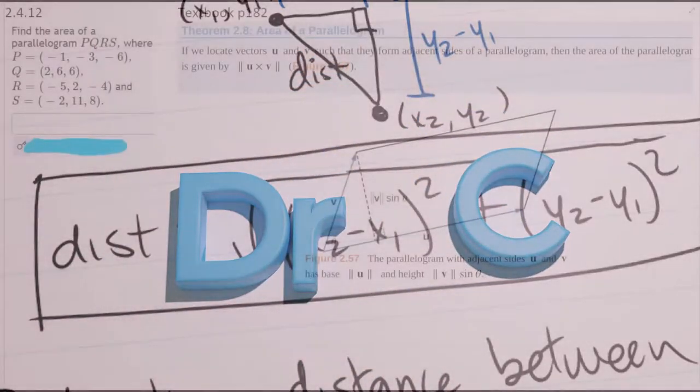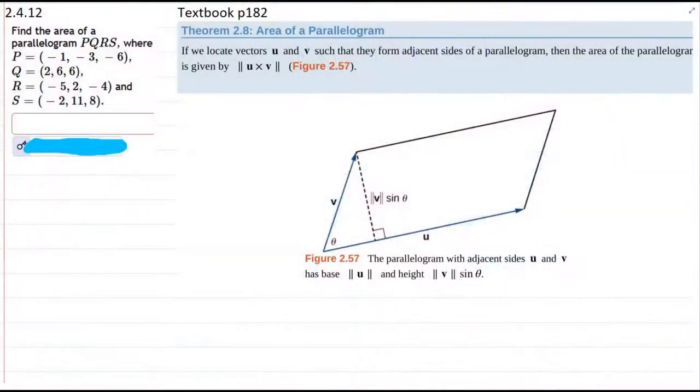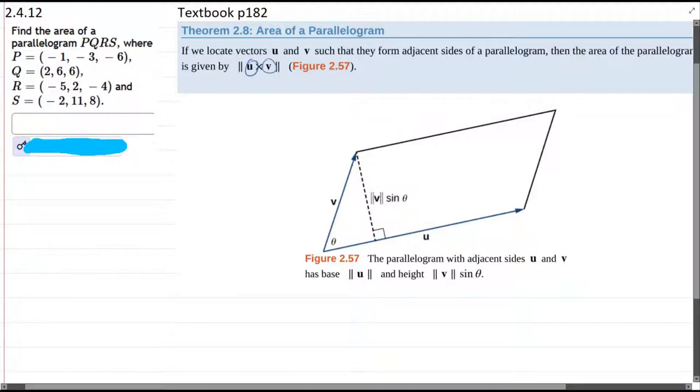We're about to compute the area of a parallelogram. In the textbook page 182 we have our area of a parallelogram formula. We are going to take the two vectors and cross them and then take their magnitude.